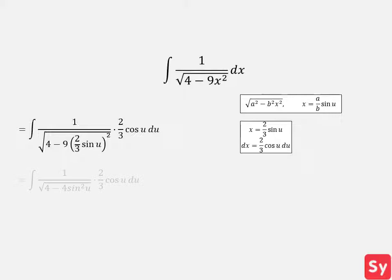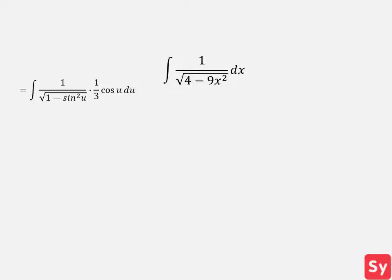We will simplify this and get 1 over the square root of 4 minus 4 times sine squared u times 2 thirds times cosine of u du. We will simplify this even more by pulling out the square root of 4. Now we will use a trig identity.